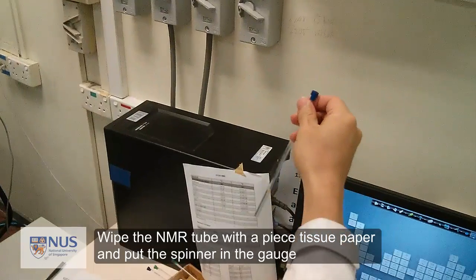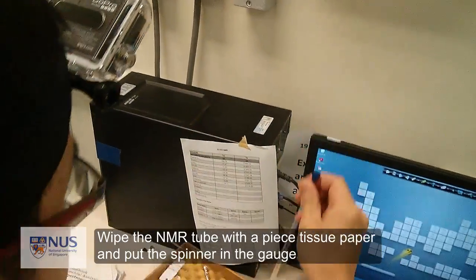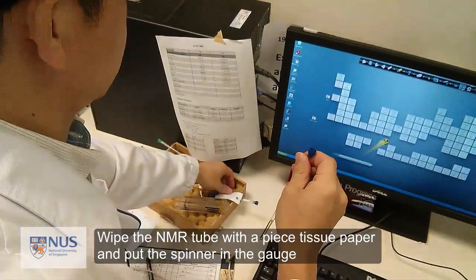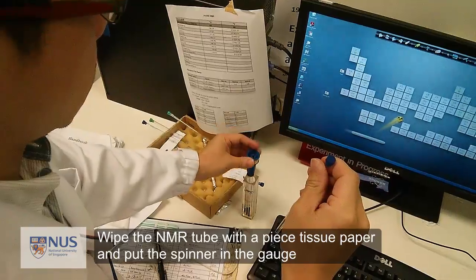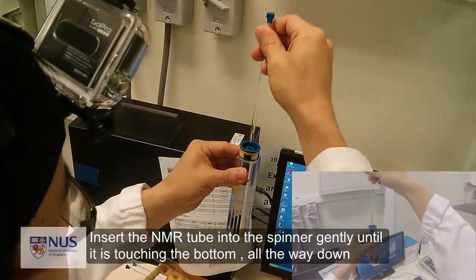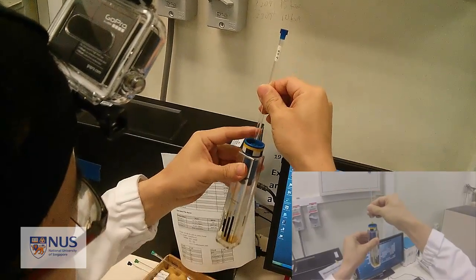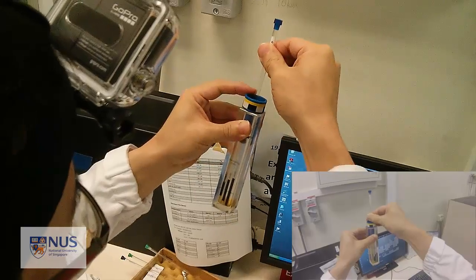Wipe the NMR tube with a piece of tissue paper and put the spinner in the gauge. Insert the NMR tube into the spinner gently until it is touching the bottom, all the way down.